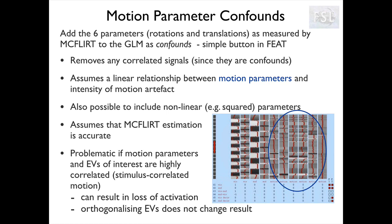This approach also assumes that the estimation of motion parameters is accurate because we use the output of McFlirt as regressors. A particular scenario where this technique is problematic is when motion is highly correlated with our task, so motion parameters will be correlated with our EVs of interest. An example of stimulus-correlated motion is when a subject moves their head every time they press a button. In this case, there is no way to distinguish the signal due to motion from the signal due to the stimulus, and everything that can be explained by the motion confounds will not end up in our contrast of interest and we will lose activation. However, this is not a problem of this technique - it's just not possible to distinguish the contribution of correlated EVs, so think carefully about your study design to avoid this situation.